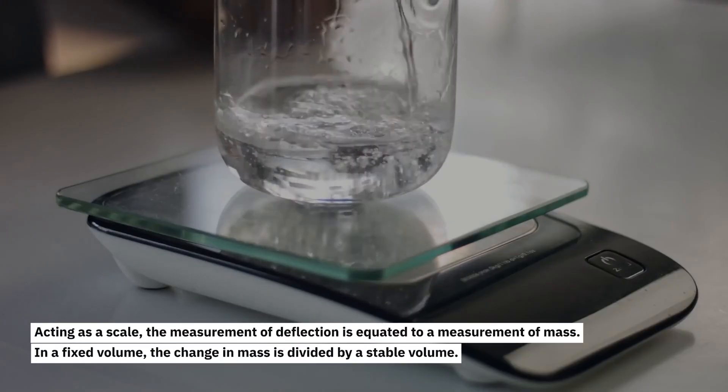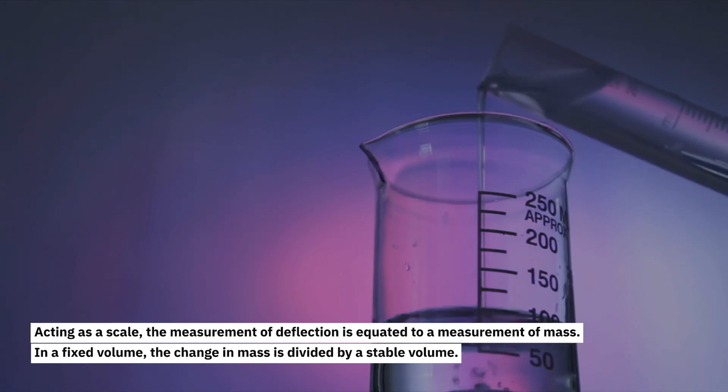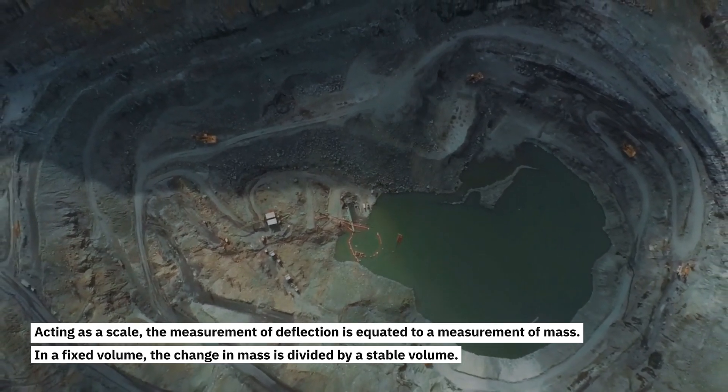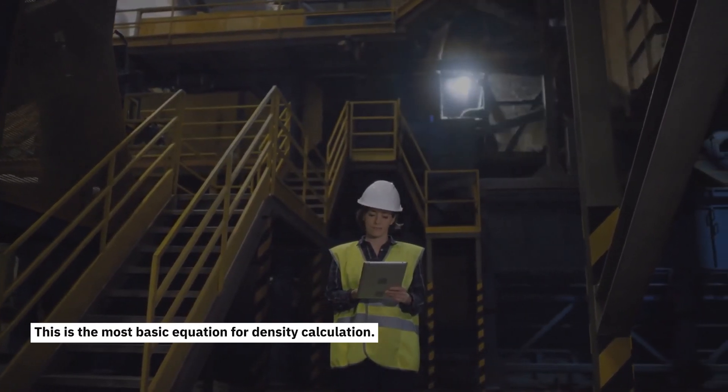Acting as a scale, the measurement of deflection is equated to a measurement of mass. In a fixed volume, the change in mass is divided by a stable volume. This is the most basic equation for density calculation.